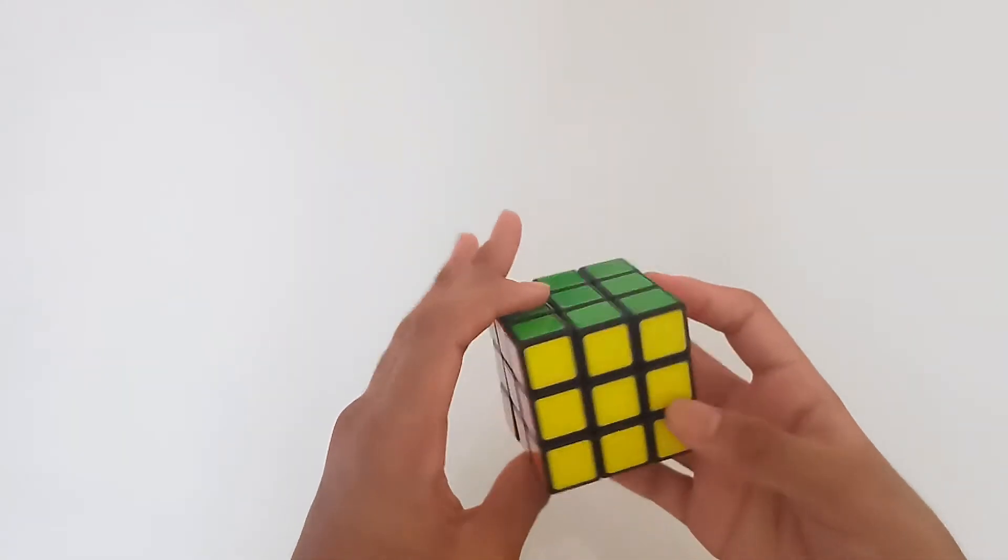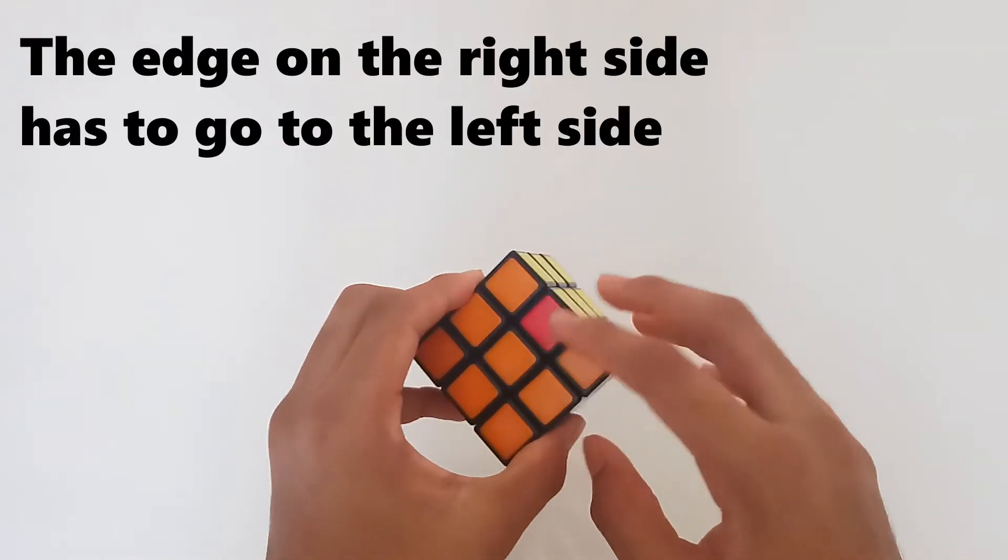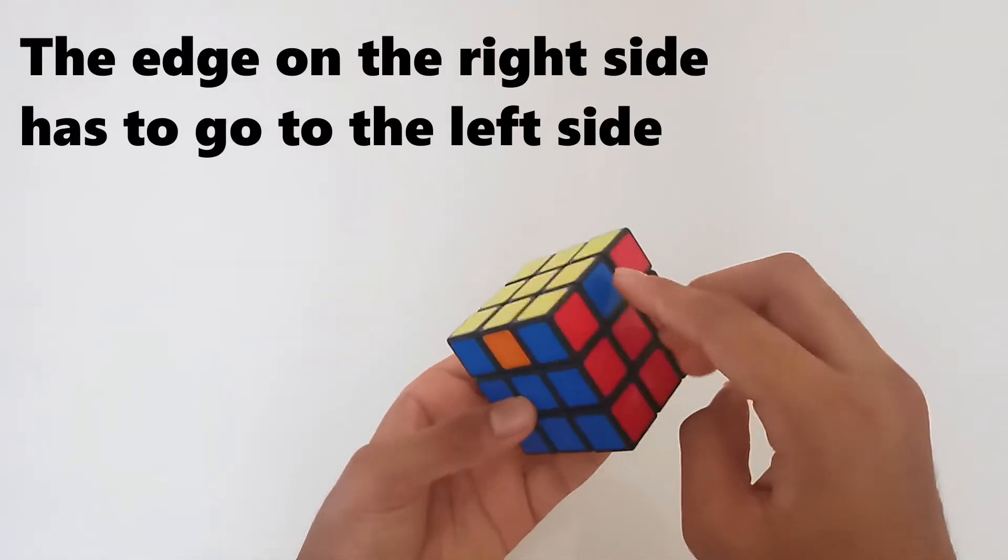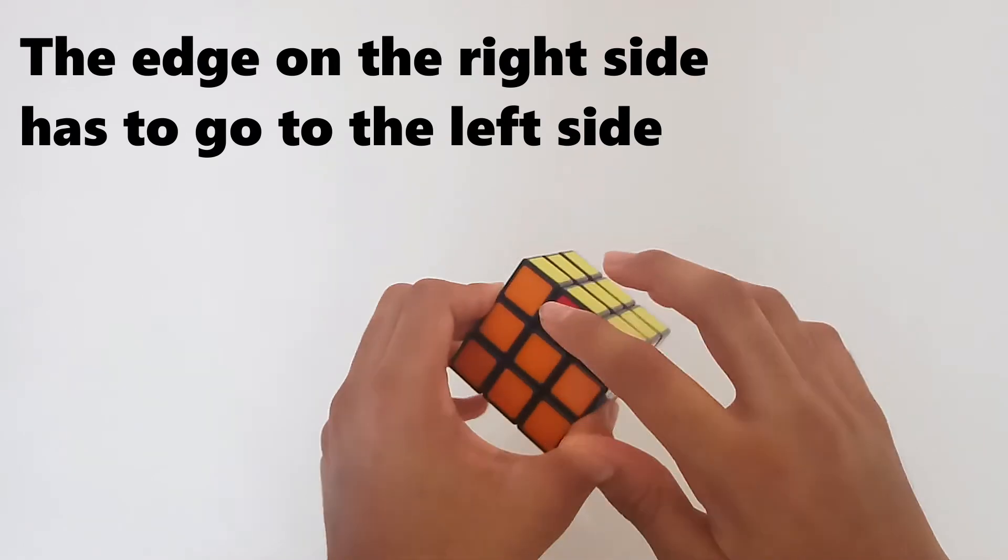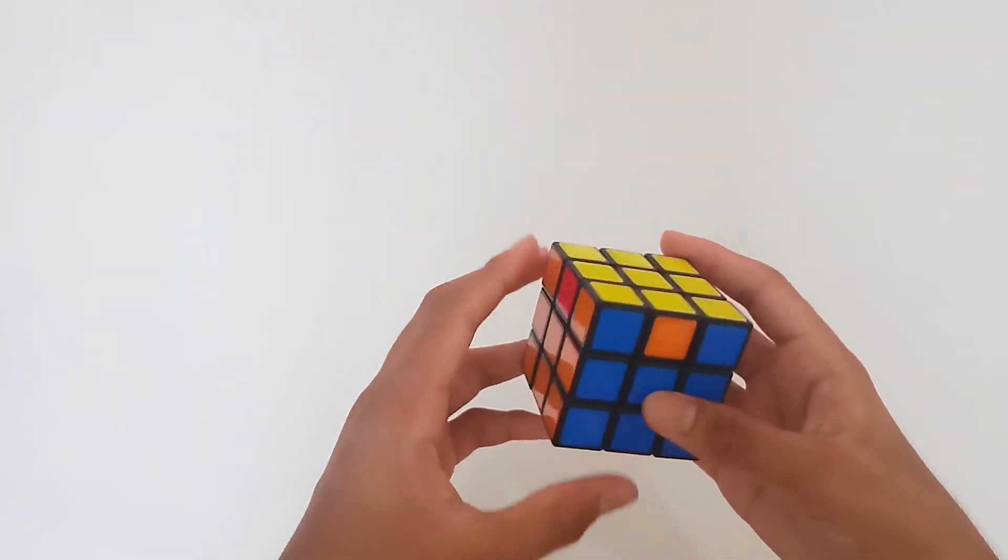But if you get a case like this where this edge piece has to go over here, this edge piece has to come over here, and this piece has to come over here, you do this algorithm.